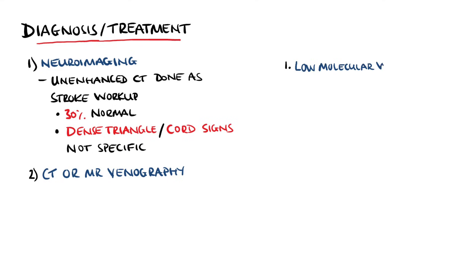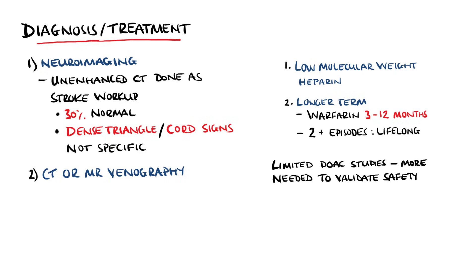The mainstay of treatment is low molecular weight heparin, typically as two divided doses per 24 hours. Longer term anticoagulation is also used to prevent future thrombotic events. Often, this is warfarin, lasting between 3 and 12 months. If an individual has had two or more episodes, then they will likely require lifelong anticoagulation. The evidence for direct oral anticoagulants is at the moment limited, with studies suggesting safety and efficacy. However, further trials are needed to validate the findings and to determine the optimal regimens.